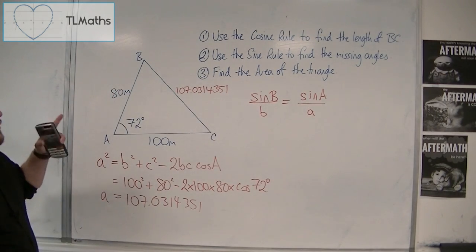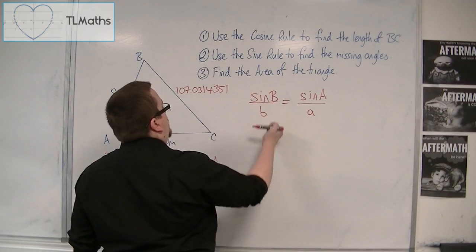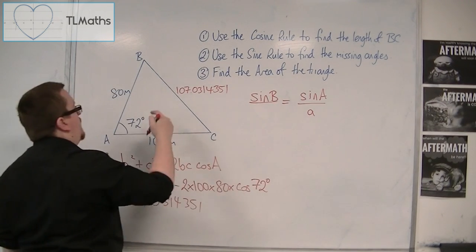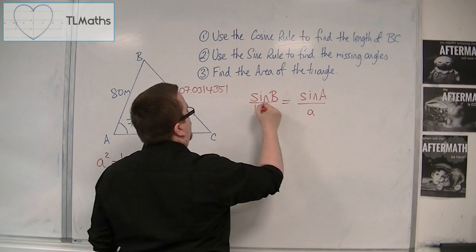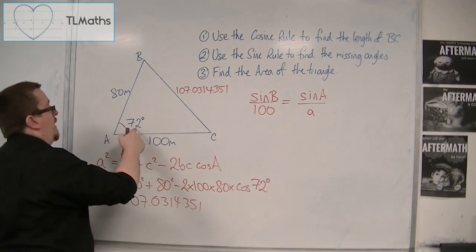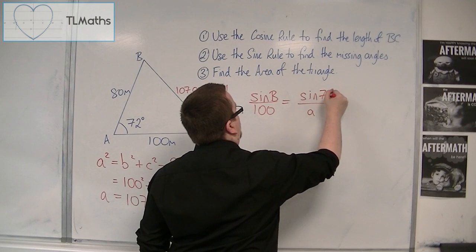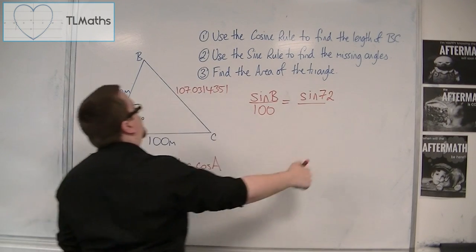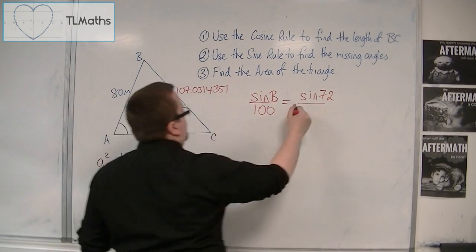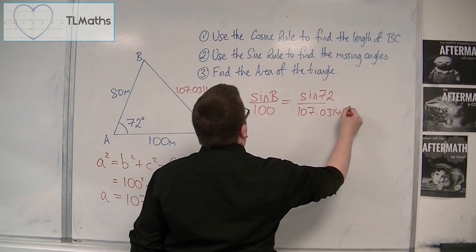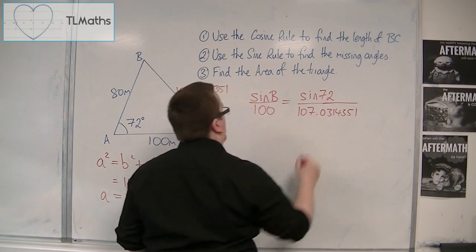So, sine b is the one that I want. b, little b, is 100. Capital a is the angle 72. And little a is the 107.0314351.